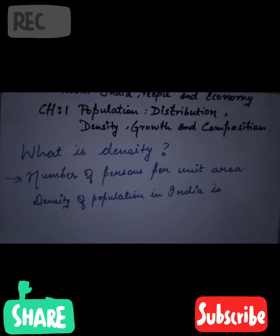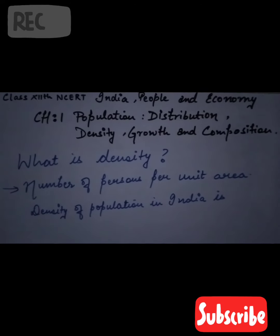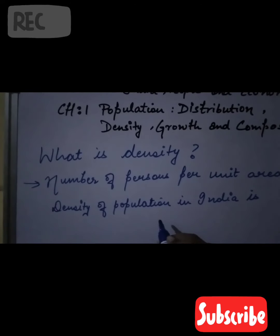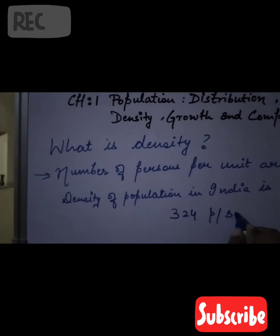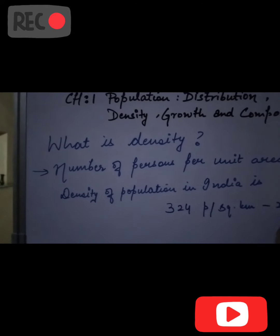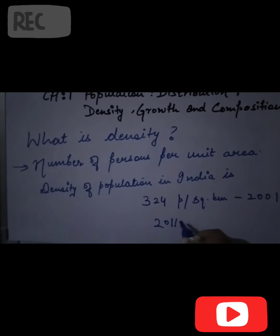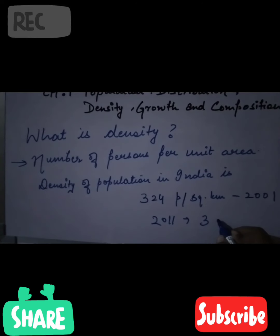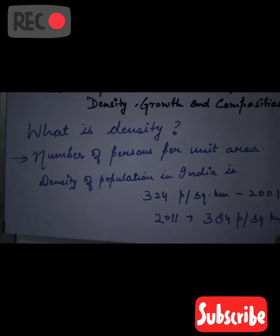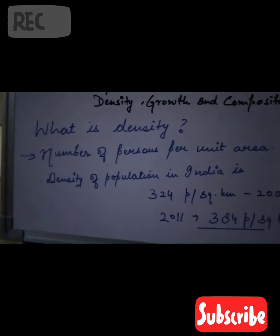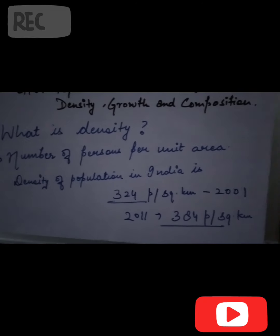Density is the number of persons per unit area. The density of population in India according to the 2001 census was 324 persons per square kilometer. According to the 2011 census, it is now 384 persons per square kilometer. This is the new data you need to learn and provide in your answers.